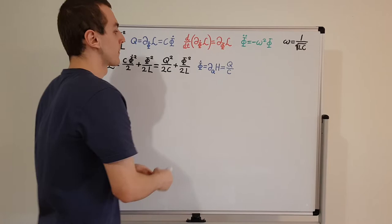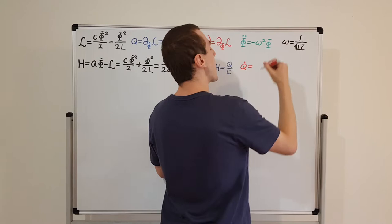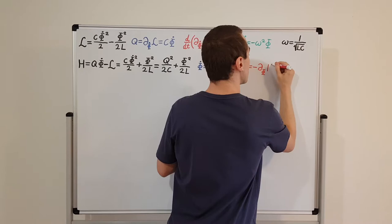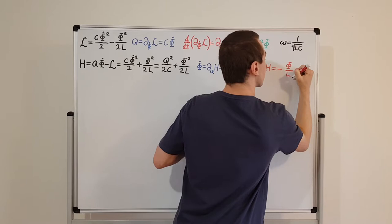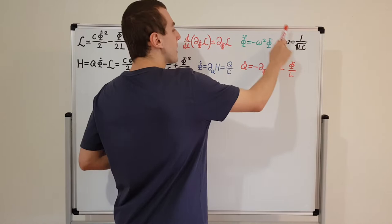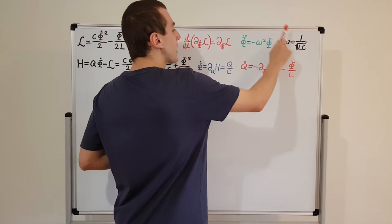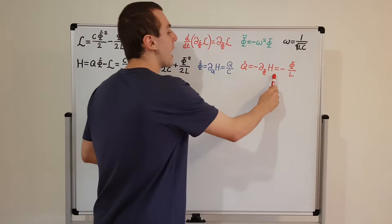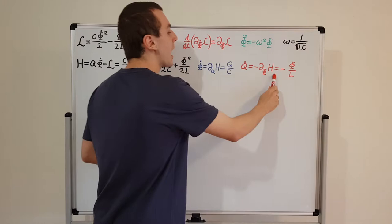Now let's look at the time derivative of Q. Q dot is equal to minus the partial derivative with respect to phi of the Hamiltonian. Using the power rule, that gives us minus phi over L. So now we have two first-order differential equations. In Lagrangian mechanics, the Euler-Lagrange equation gave us a second-order differential equation. Now we've split that into two first-order equations — one for phi and one for Q.